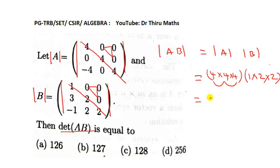16 into 4, we need to do 64. 1 into 2, 2 into 2, 4. We need to do 64 into 4. We need to do 256.